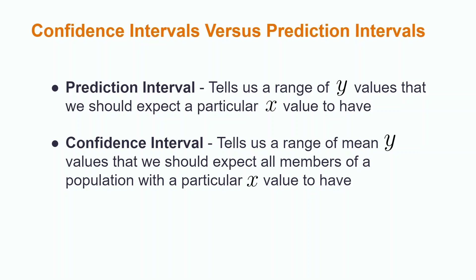The difference between confidence intervals and prediction intervals is that prediction intervals give us a range of values that y can be for a particular x value, but confidence intervals give us a range of values for the mean y for every observation in the population that has a specific x value.